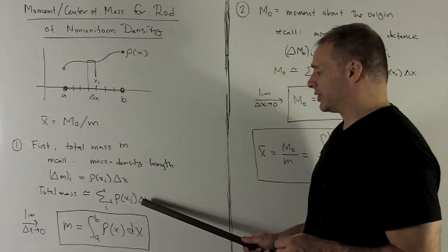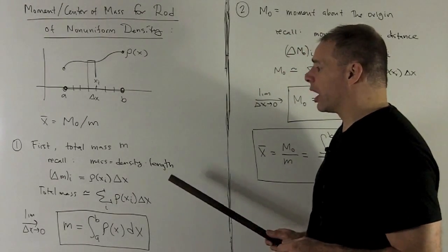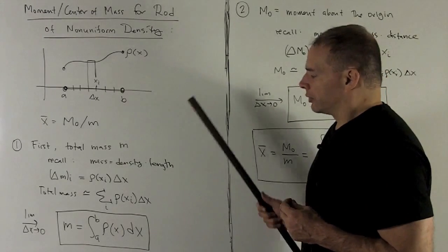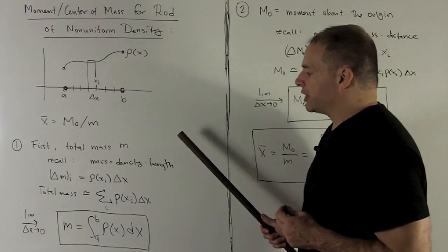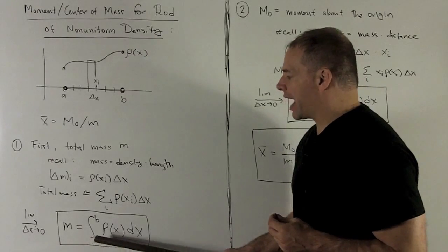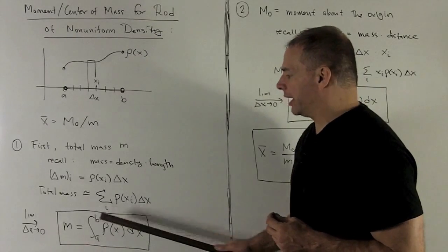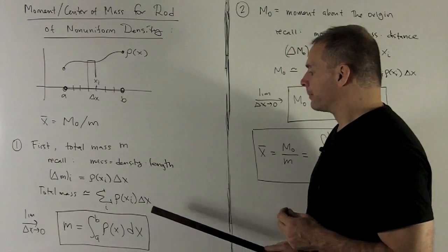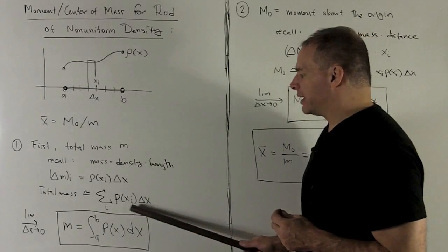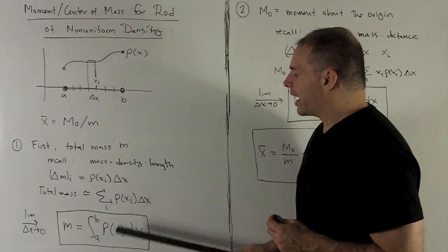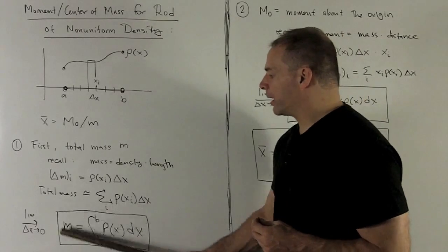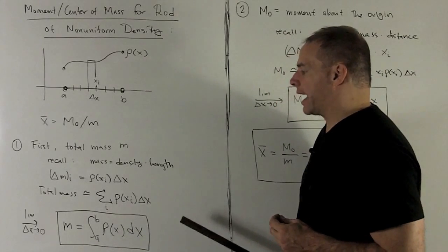I take the limit as Δx goes to zero. The translation is: wherever I see a sigma, I replace it with the integral sign going from a to b. Δx goes to dx, and wherever I see an x_i, I change it to x. So this gives us our formula for total mass: M = ∫[a to b] ρ(x) dx.